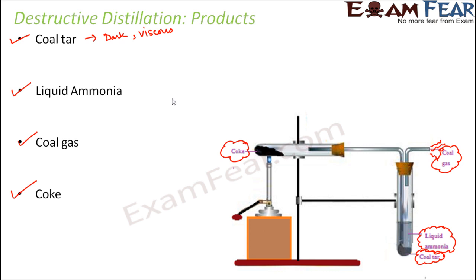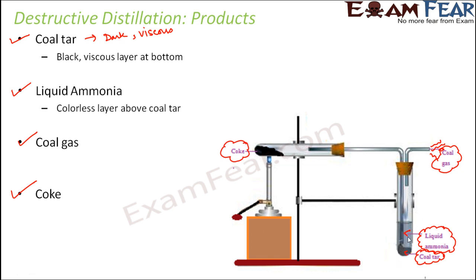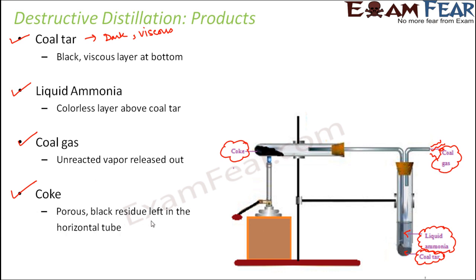Let's have a quick review. Coal tar was the black viscous layer at the bottom. Liquid ammonia was the colorless layer above coal tar. The unreacted vapor which gets released out is coal gas. And finally the porous black residue left in the horizontal tube is coke. Those were the four different products received as a result of destructive distillation.